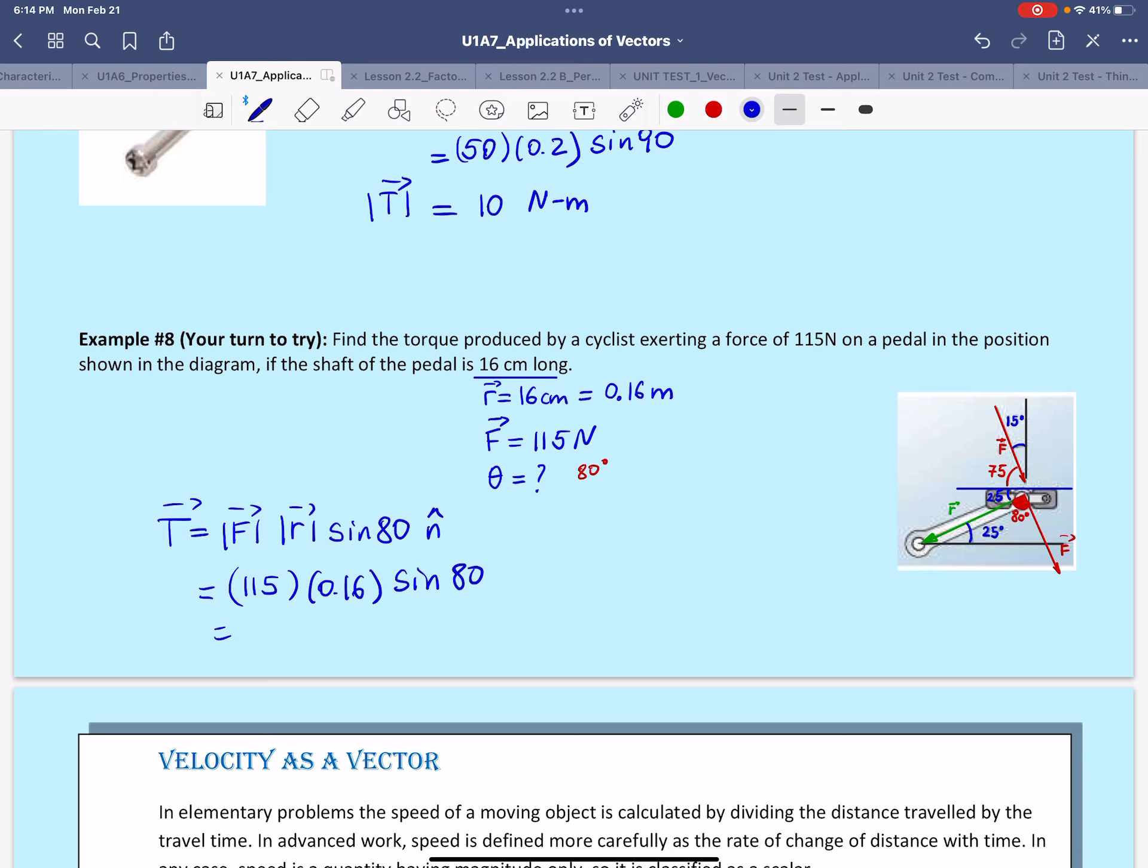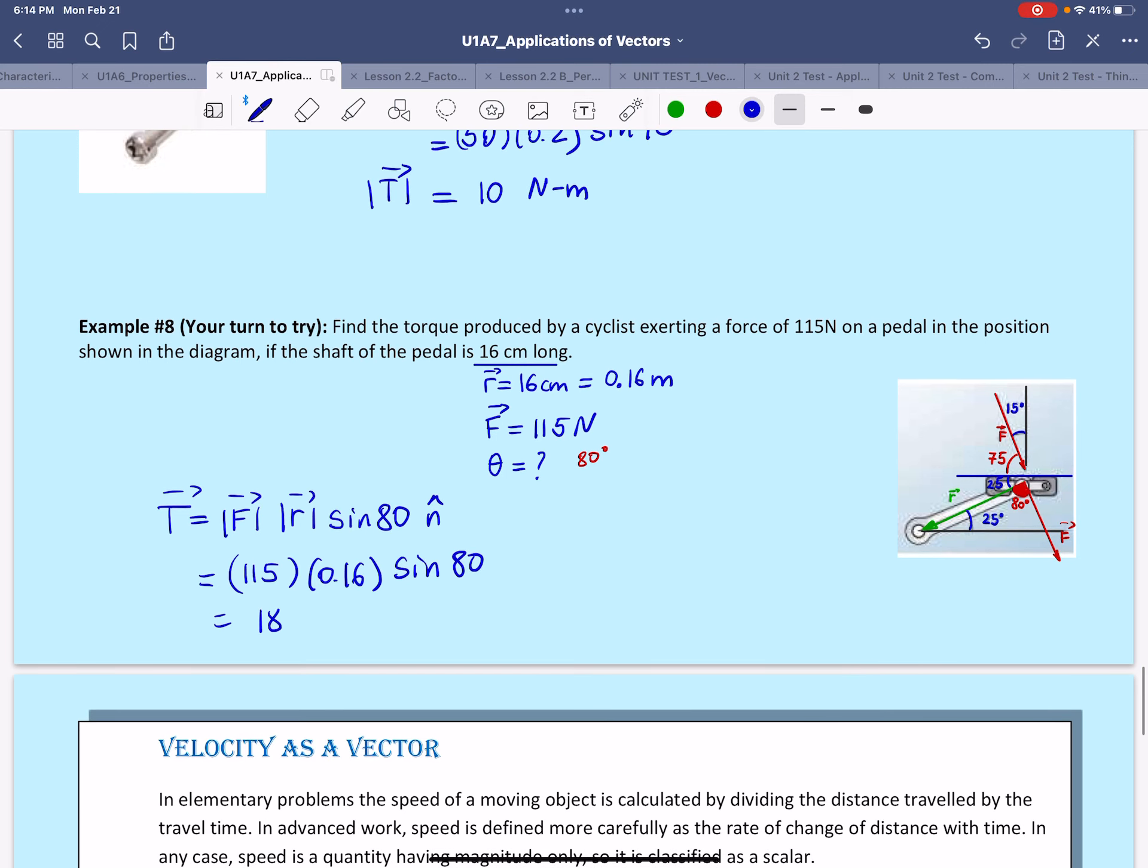So calculate it: 115 times 0.16 times sine of 80. I got 18.1 newton meters. So that would be the torque in this case, and it will follow the direction perpendicular to both R and F.